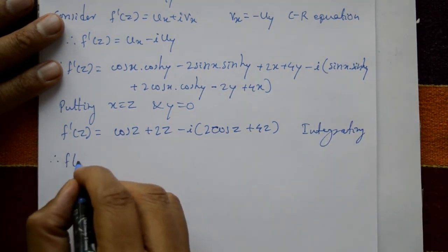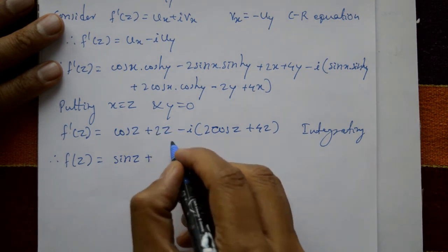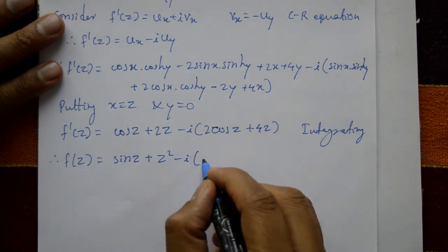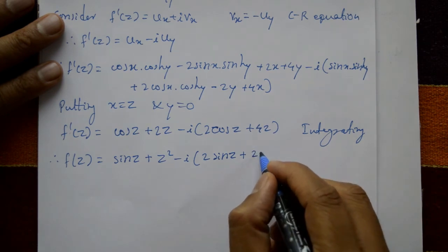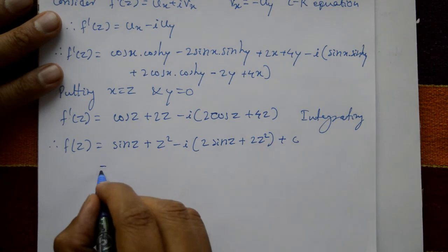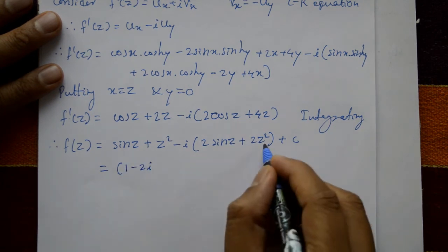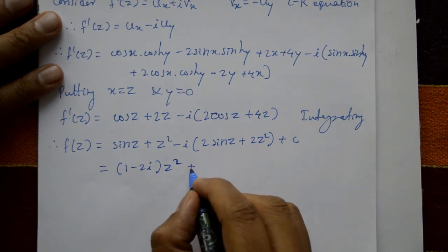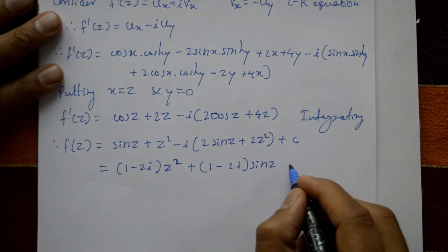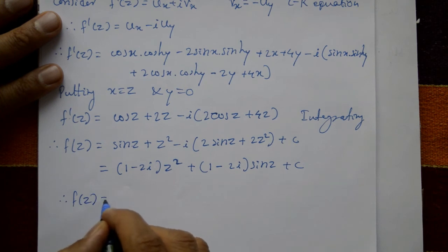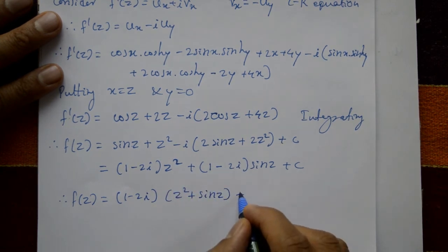Integrating both sides: f(z) = integration of cos(z) = sin(z), plus z²/2 · 2 cancels to give z², minus i times 2·sin(z) plus z² (2 cancels), plus 2z² plus c. Opening the bracket and collecting z² terms: (1 − 2i)·z², and collecting sin(z) terms: (1 − 2i)·sin(z) plus c. Therefore f(z) = (1 − 2i)·z² + (1 − 2i)·sin(z) + c. This is the required solution.